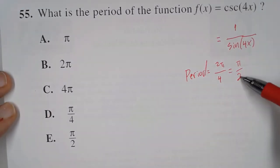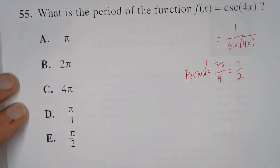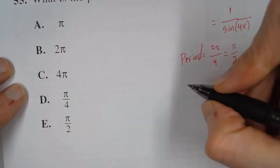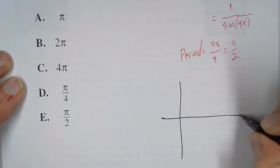And so, that's the period length for sin(4x), but it's also the period length of 1 over sin(4x). And that's because, as sine moves, so does cosecant.